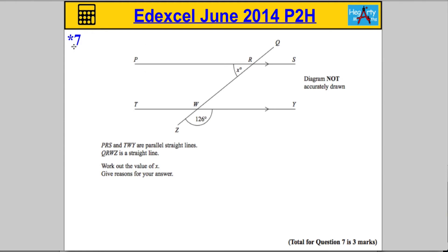Question seven is a starred question, so we need to ensure the quality of our written communication is spot on to get full marks. We've got PRS and TWY as parallel straight lines, and QRWZ as a straight line. We're asked to work out the value of x and give reasons for our answers.